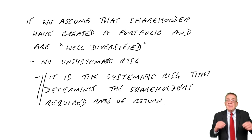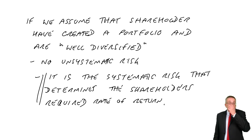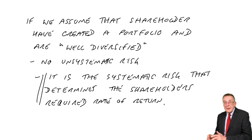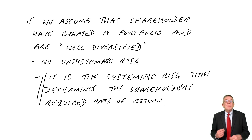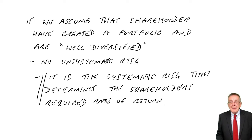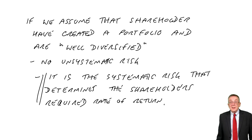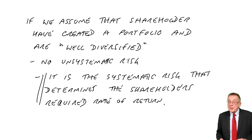It's the level of systematic risk that determines the required rate of return. Capital asset pricing model says if we can measure the systematic risk of an investment, then we can determine the rate of return that shareholders require. So that's where the formula comes in. I'll stop this lecture here, but in the second lecture on this chapter I'll show you how the systematic risk is measured and how we can use the systematic risk to determine the return that shareholders require.